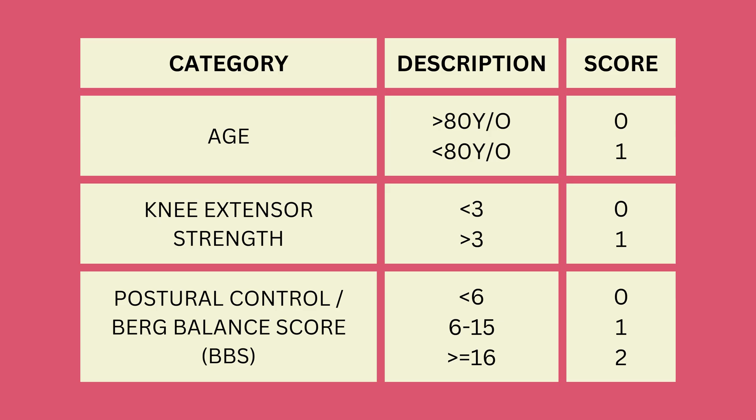As you can see, this algorithm is actually quite simple. It only has 3 categories: age, knee extension MMT score, and postural control.